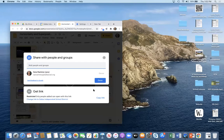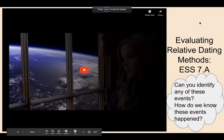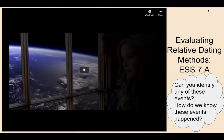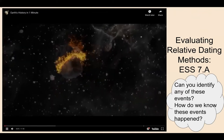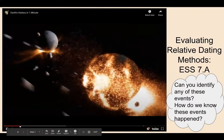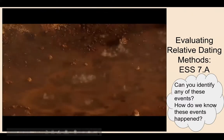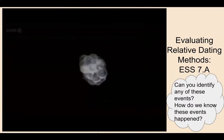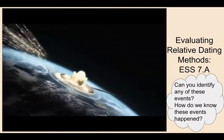I'm going to show you a super quick little video — this is a video of Earth's history in one minute. As you're watching this video, see if you can identify any of the events in the video, and also think about how do we know these events happened. As a scientist, what are some methods that we can use to determine the date of events or how old fossils are?